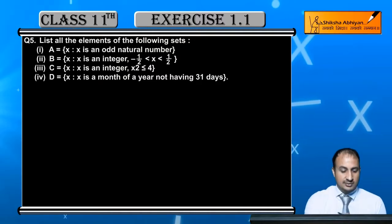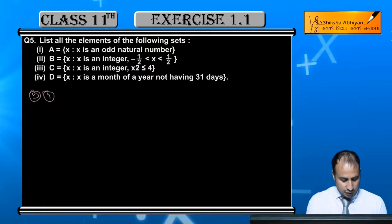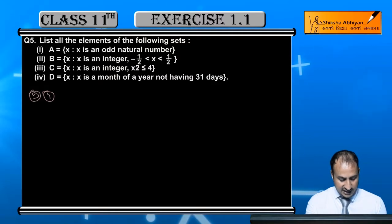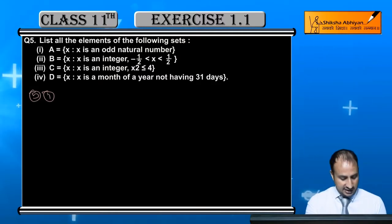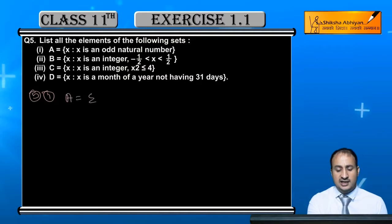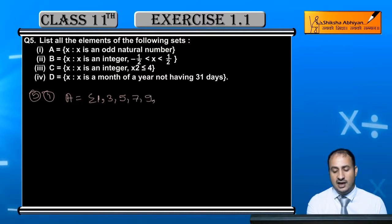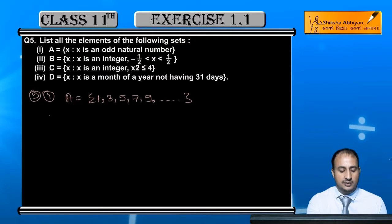First, we can see set A, where x is an odd natural number. So A contains all odd natural numbers: 1, 3, 5, 7, 9, and so on. This is an odd natural number set.